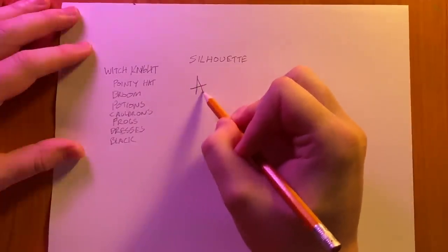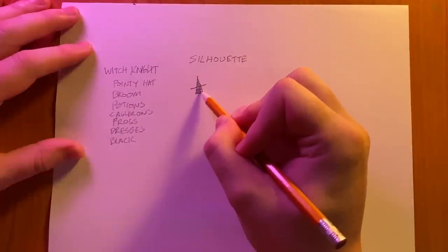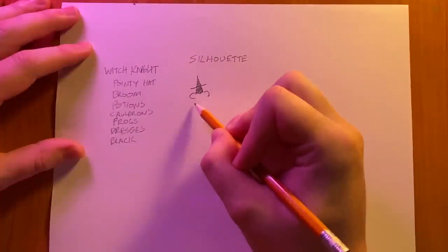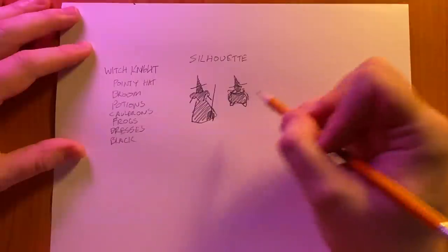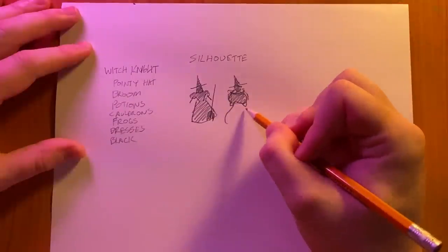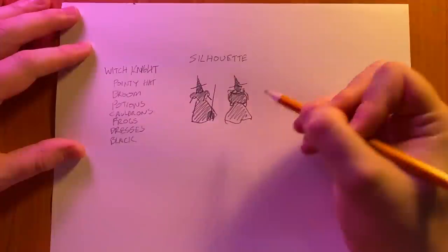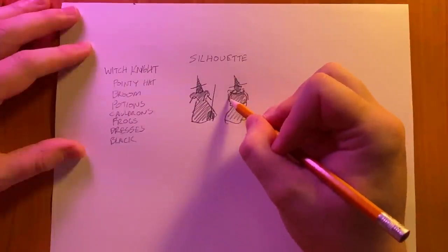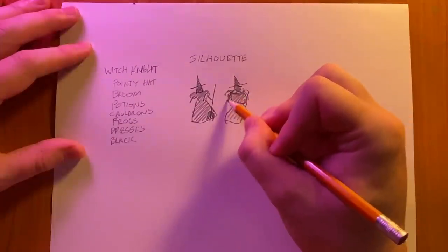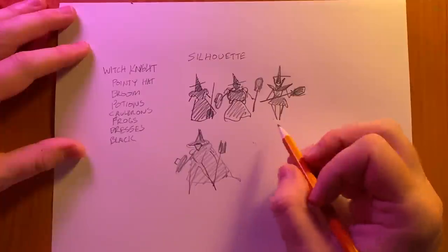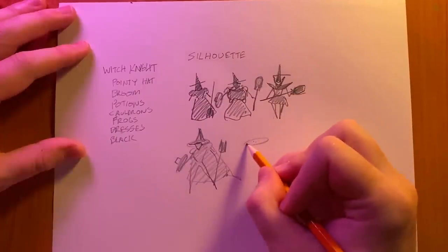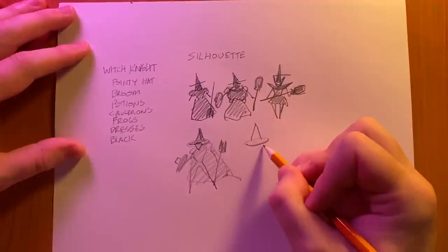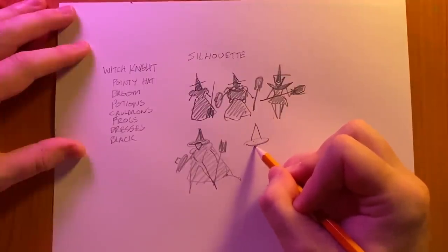Next we're going to work on silhouettes. Silhouettes are the exterior shapes that protrude away from the body shape of the character. The important thing is to iterate, to make lots of thumbnail sketches. We're just trying to figure out what shapes say witch and knight together. Rarely do you have your best idea at first, and even if you do you won't know until you've had several other ideas to compare it to.